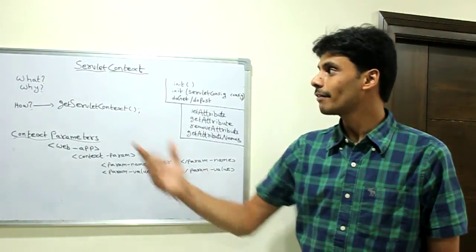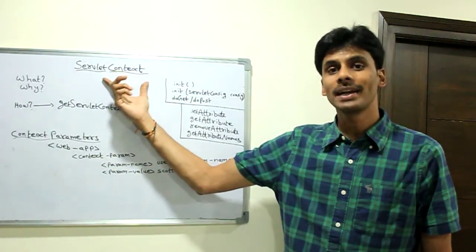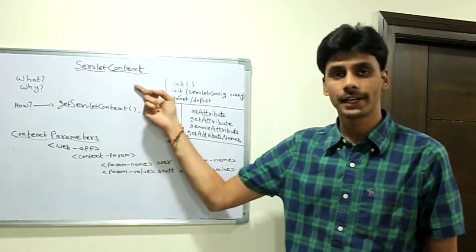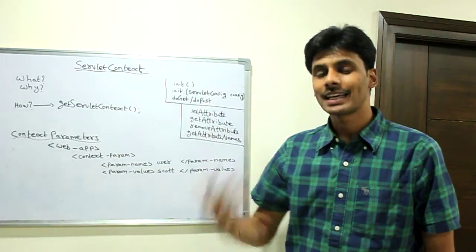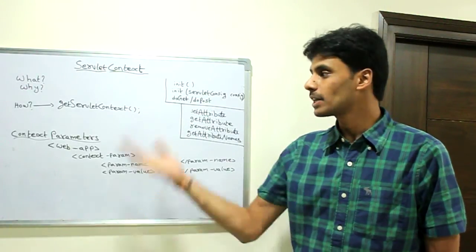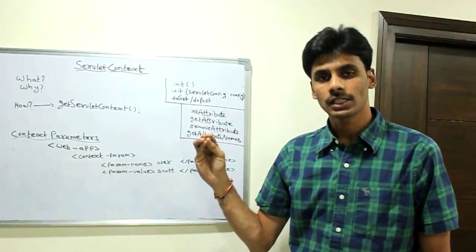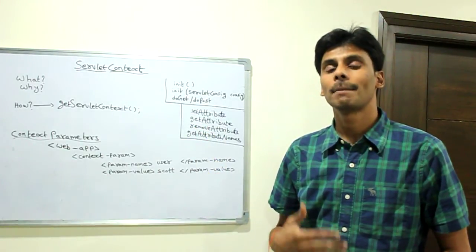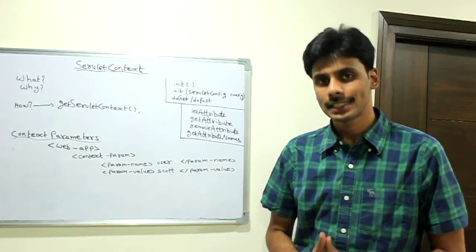Tomcat or WebLogic have classes which implement this interface and they create an instance of that particular class, load all application level information into the class instance that the application servers create, and then they pass it over to our servlet.